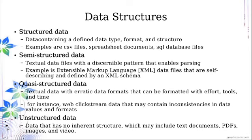Semi-structured data consists of textual data files with a discernible pattern that enables parsing. An example is XML data files, which are self-describing and defined by an XML schema. Quasi-structured data is another type of textual data, but more erratic in format — it can be formatted with some effort. For example, web pages containing text, where you can apply a specific tool to search for a particular word within that text.